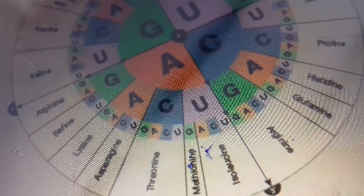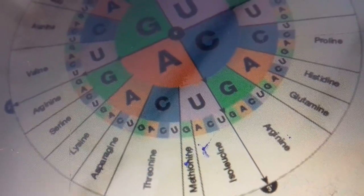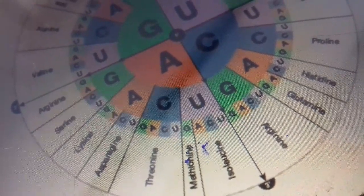Genetic code is universal genetic code because universal means that it is found the same in all organisms.